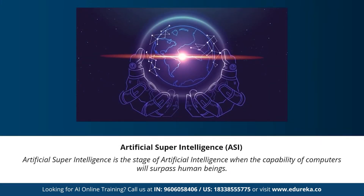Artificial super intelligence is the stage of AI when the capability of computers will surpass human beings. It is currently seen as a hypothetical situation, as depicted in movies and science fiction books — machines taking over the world. I believe machines are not very far from reaching this stage given our current pace; however, such systems don't currently exist. Artificial super intelligence refers to any system that is much smarter than humans.